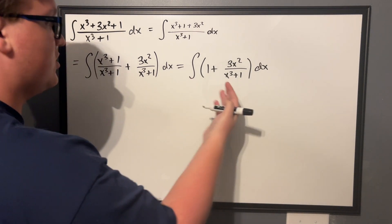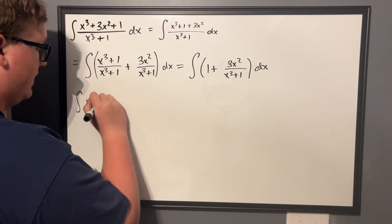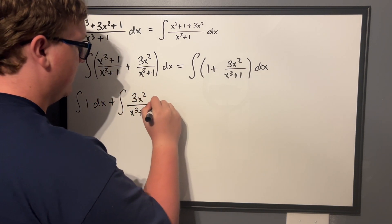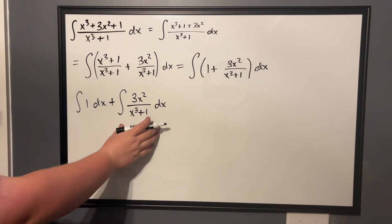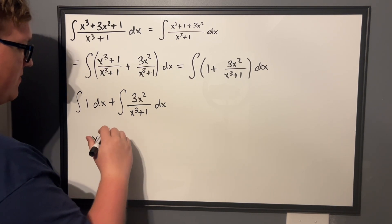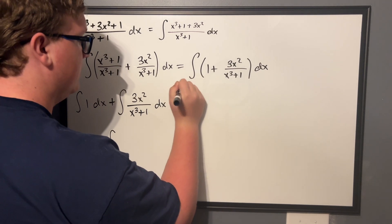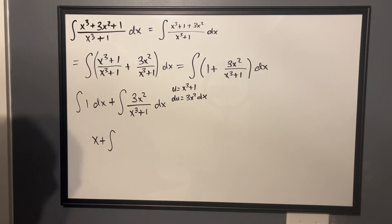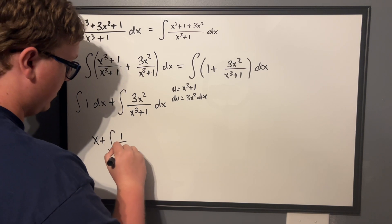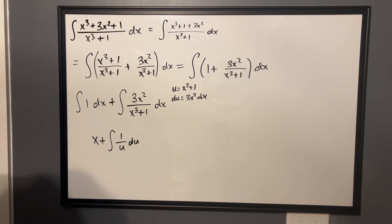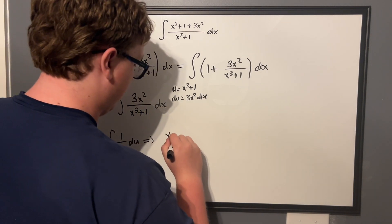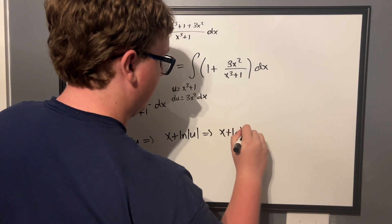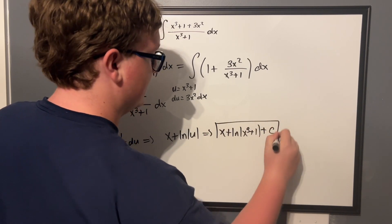Now we split the integrals up. We have the integral of 1 dx, which is easy, plus the integral of 3x²/(x³ + 1) dx. This second integral can be done using a u-substitution. The integral of 1 dx is just x. For the second part, if we let u = x³ + 1, then du = 3x² dx, which cancels our numerator. So we have the integral of 1/u du, which evaluates to the natural log of |u|. Substituting back, we get x + ln|x³ + 1| + C.